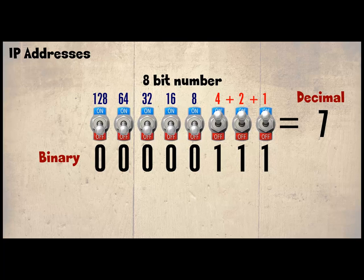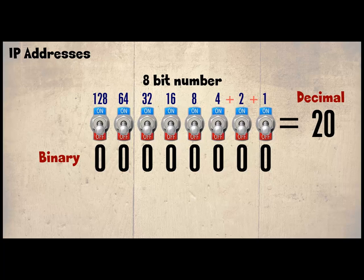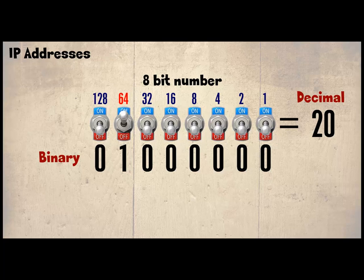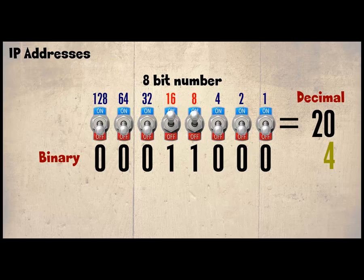The clever thing about binary is it only uses 0s and 1s, and no matter what combination you choose, there can only be one combination that results in decimal 7. Let's check what decimal 20 is in binary. To do this we subtract 128 from 20 — we can't, so we move to 64, then the next. We can subtract 16 from 20, leaving a balance of 4. The next switch is 8 which is too big, so we use the next switch which is 4. So decimal 20 is 00010100.